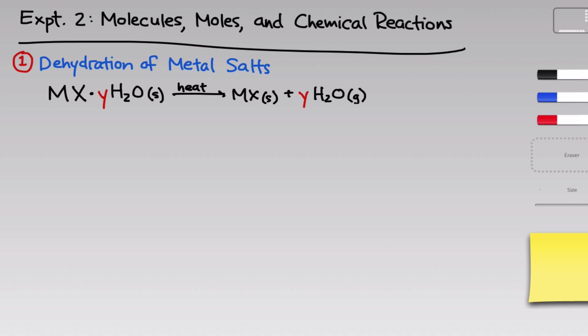If we apply heat to the solid metal salt through a Bunsen burner flame, we separate water molecules from the metal salt. The solid metal salt remains intact, the water molecules become water vapor and evaporate from the hot metal salt.